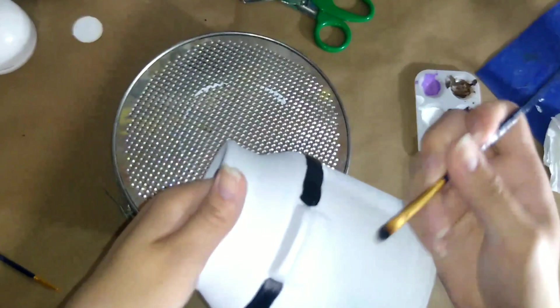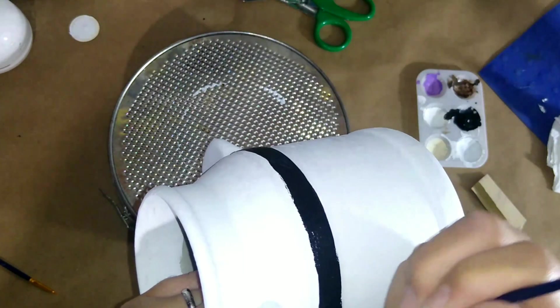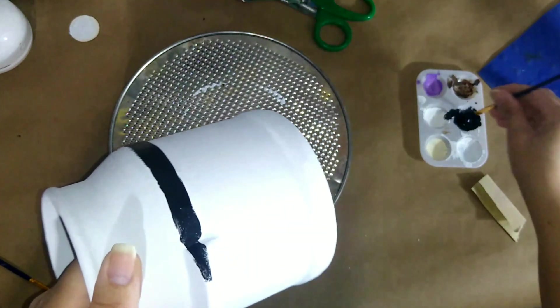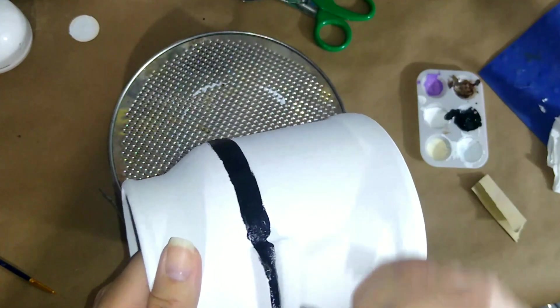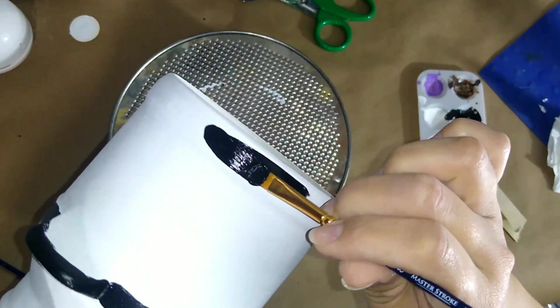Then I'm trying to decide whether I want to do the handles all black or just a portion of it. So I start off with doing just a little portion of it, and then I end up painting the whole thing but that's a little bit later.